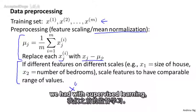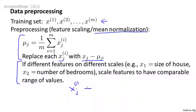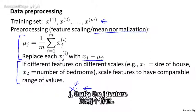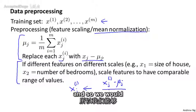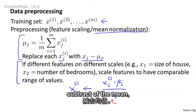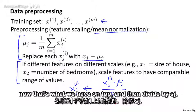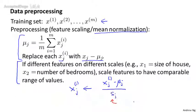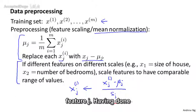Similar to what we had with supervised learning, we would take feature j and subtract off the mean, then divide by sj. Here, sj is some measure of the range of values of feature j — it could be the max minus min value, or more commonly, it is the standard deviation of feature j.